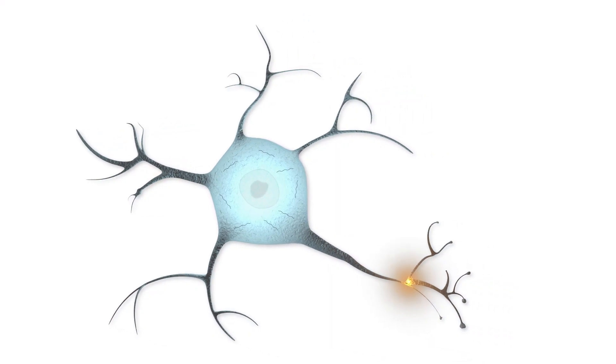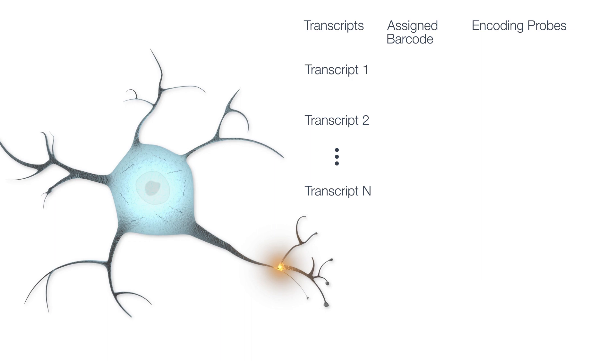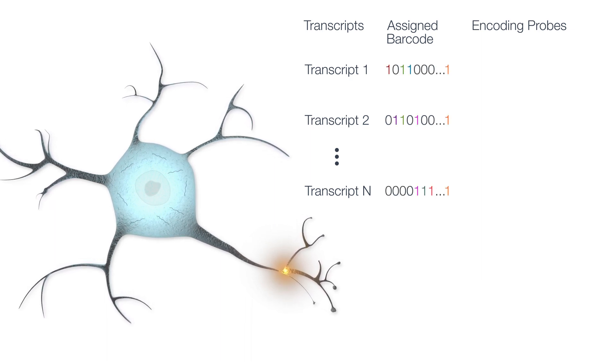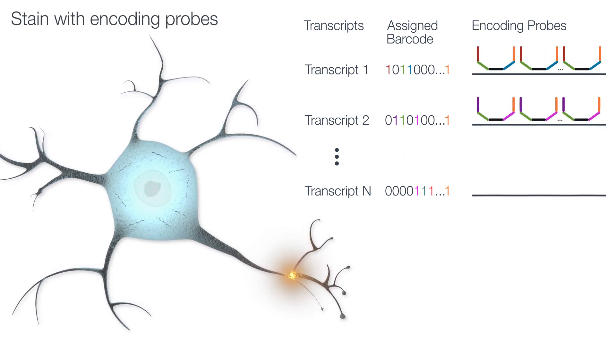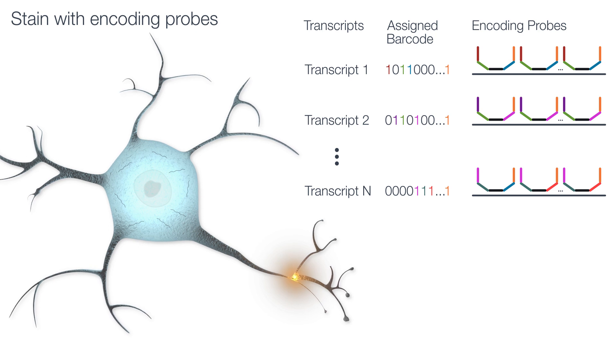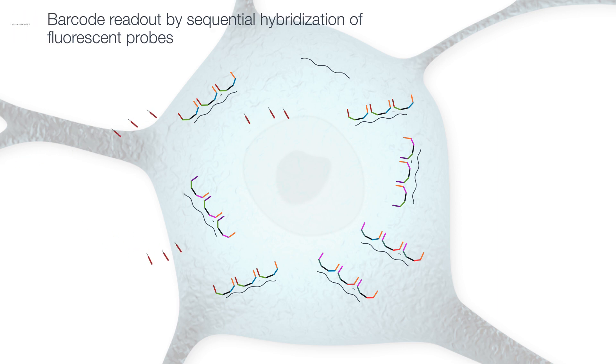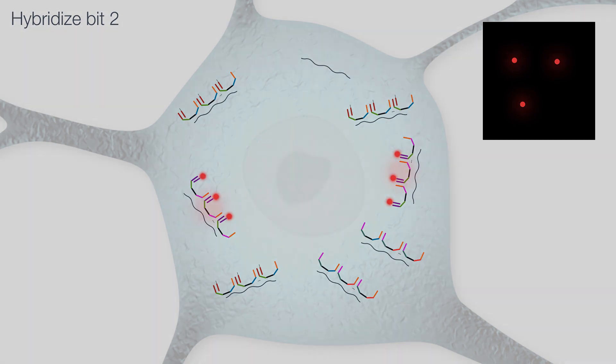MERFISH uses a barcoding scheme where each targeted gene in the custom designed panel is assigned a unique binary barcode. Sequential rounds of imaging are used to read out the barcode, a sequence of zeros and ones. Samples are stained with probes encoding the barcodes for the custom gene panel that allow MERScope to read out the barcode using sequential rounds of single molecule FISH. Each round of imaging corresponds with one bit in the binary barcode, and multiple sequential rounds of imaging are performed to read out the full barcode.